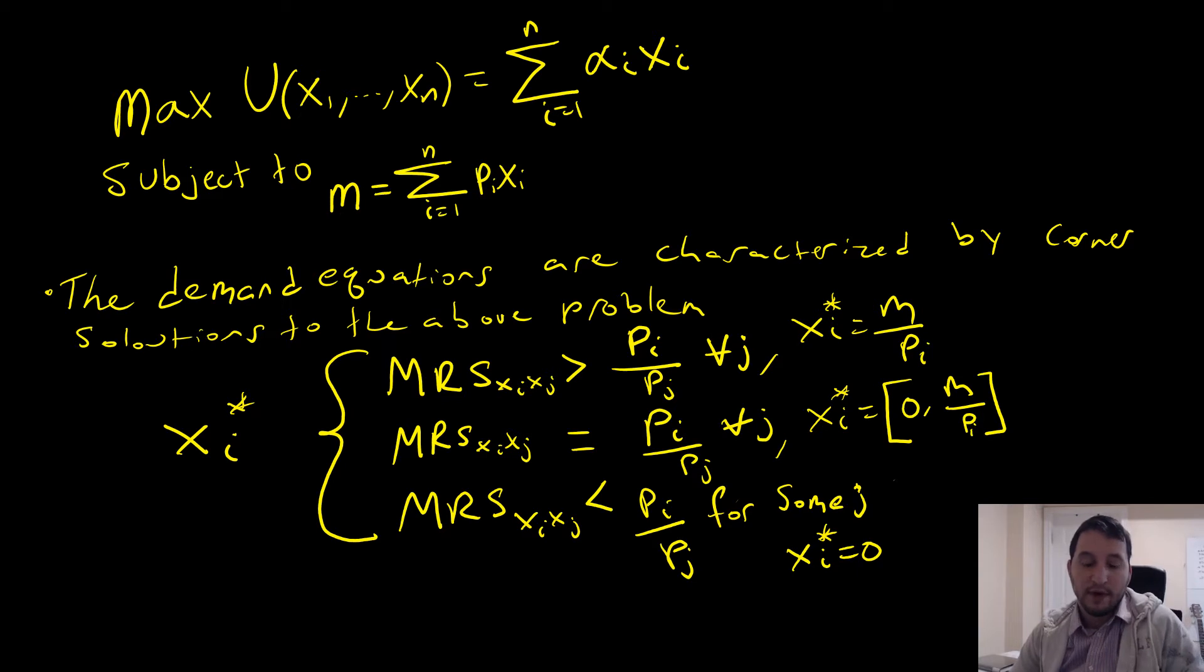And if the marginal rate of substitution is the same for every good i, we can have an infinite number of combinations between the interval of zero to investing our entire amount into good i.